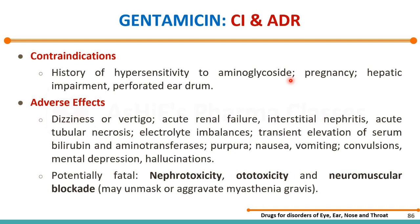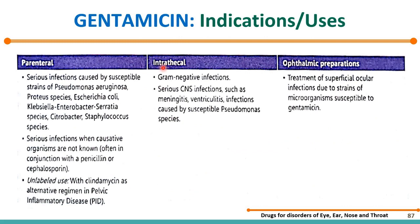Gentamicin is the drug used topically for the eye. It is used against different organisms such as Pseudomonas, E. coli, Klebsiella, Enterobacter, and Serratia species. It is also used for pelvic inflammatory disease, which affects the female reproductive system, as well as other sexual infections. This is the main example of gentamicin as a topical eye drug.